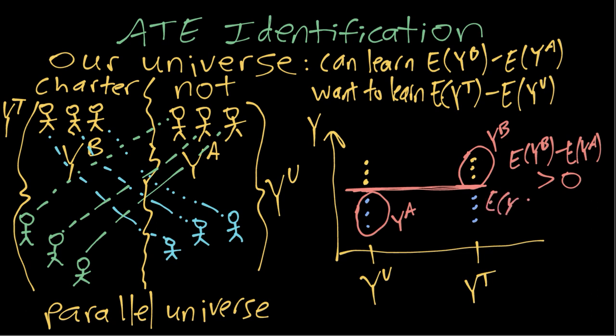So we can see in that case, why the ATE is not identified due to the self-selection into treatment. In other words, the choice of going to a charter school or not isn't totally random. It's actually based on other variables that also affect the outcome.